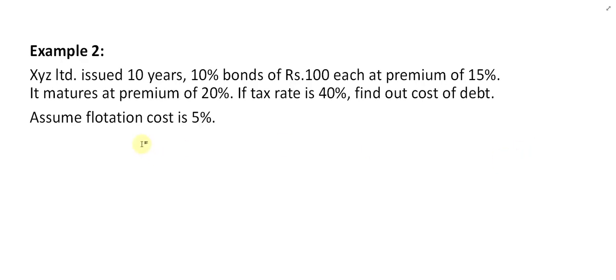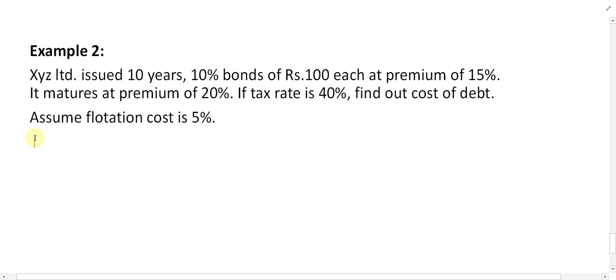Bismillahirrahmanirrahim. Let us do example number 2. XYZ Limited issued 10-year, 10% bonds of rupees 100 each at a premium of 15%. It matures at a premium of 20%. Tax rate is 40%. Find out the cost of debt. Assume flotation cost is equal to 5%.